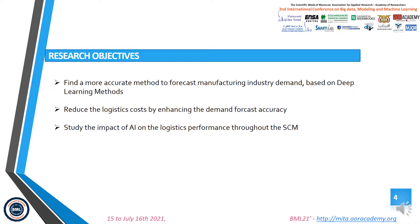We will present our research objectives. In this study, we aim to find a more accurate method to forecast manufacturing industry demand based on deep learning methods. Secondly, we aim to reduce logistics costs by enhancing demand forecast accuracy. The third objective is to study the impact of artificial intelligence on logistics performance throughout the supply chain management.